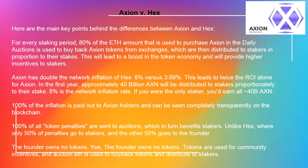In HEX, the other 50% of penalties goes to the founder. In Axion, the founder owns no tokens. Tokens are used for community incentives, and auction fees are used to buy back tokens and distribute to stakers.